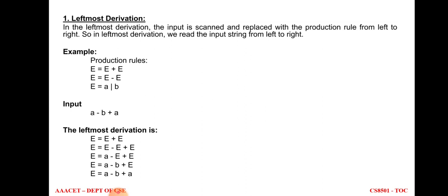Let us see an example. Grammar: E→E+E, E→E-E, E→a | b. Input string: a-b+a. For leftmost derivation we start from the start symbol E. Apply E→E+E: we get E+E. The leftmost variable is E; substitute E→E-E to get E-E+E.